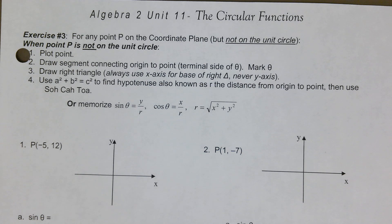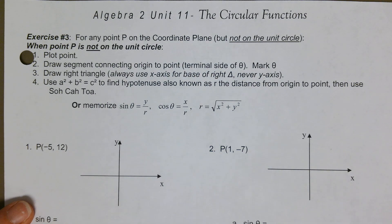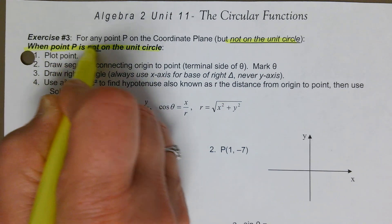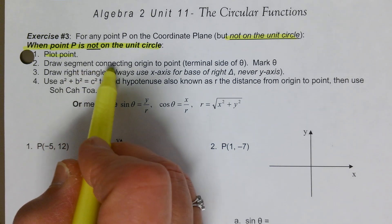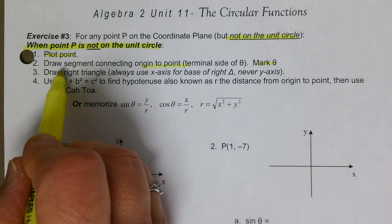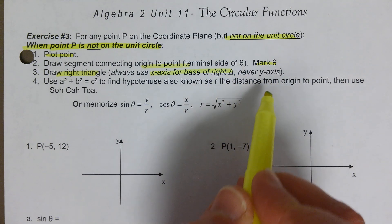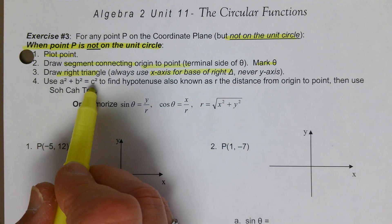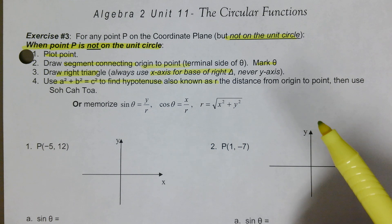Next — what do we do when the point is not on the unit circle? We plot the point, draw a segment connecting the origin to the point, mark our angle theta, and draw a right triangle — always using the x-axis for the base, never the y-axis. Then we use the Pythagorean theorem, a² + b² = c², to find the hypotenuse, also known as r — the distance from the origin to the point.